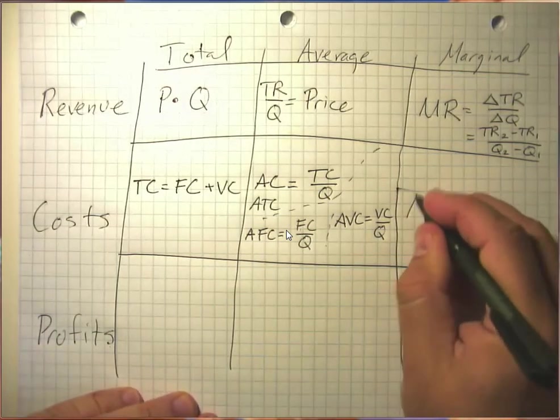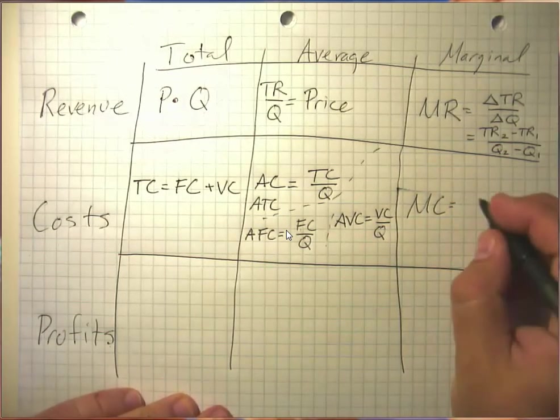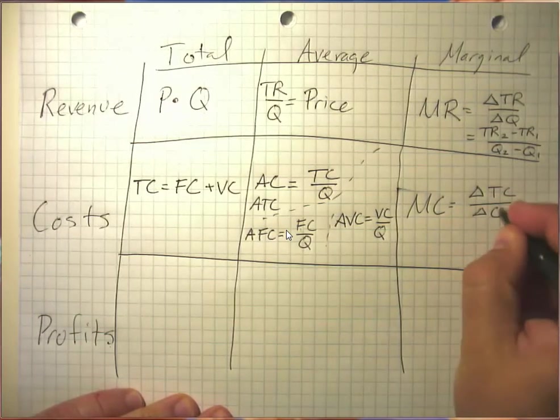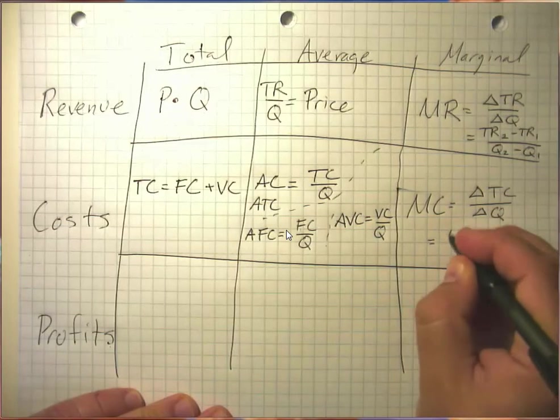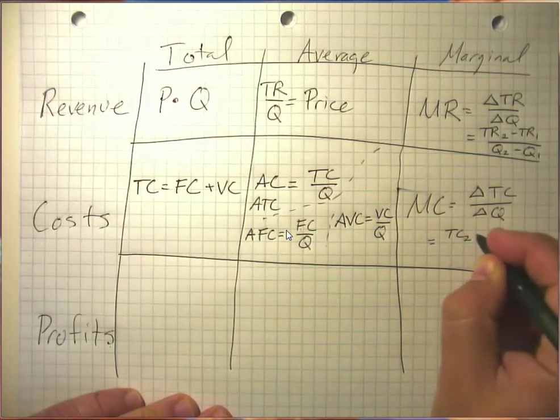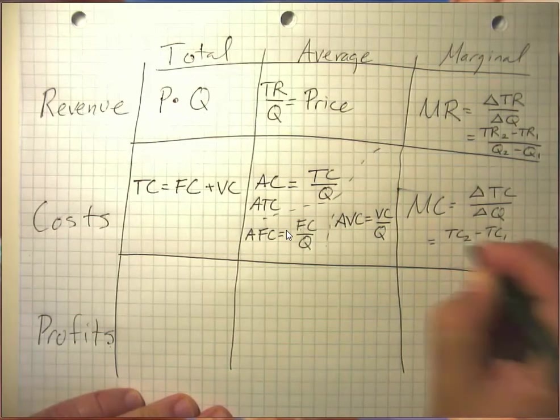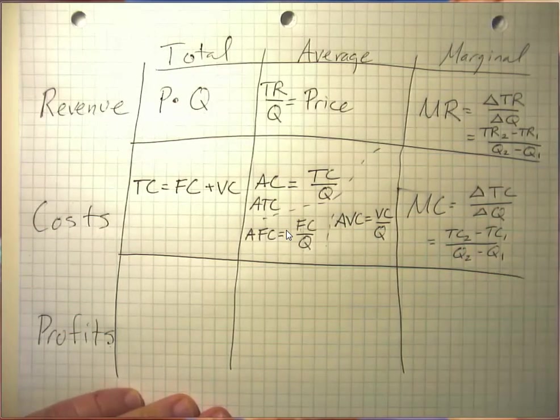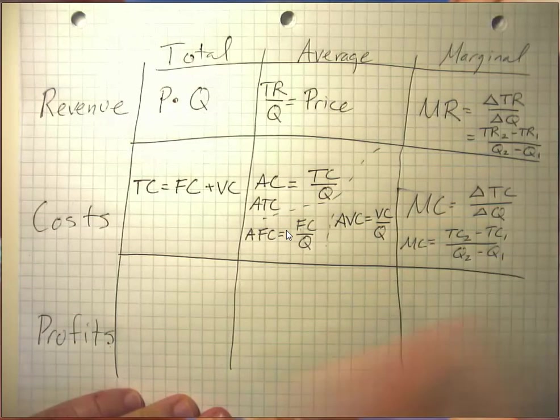Finally, marginal costs, or MC, is the change in total costs over the change in quantity. So that's going to be total cost 2 minus total cost 1 over quantity 2 minus quantity 1. So that's how we compute marginal cost.